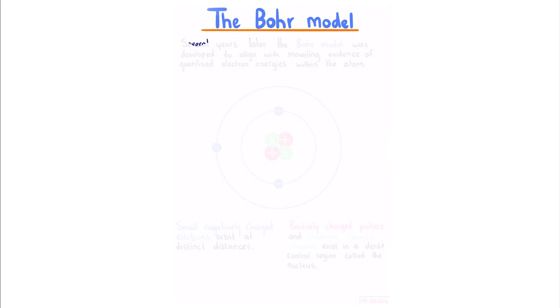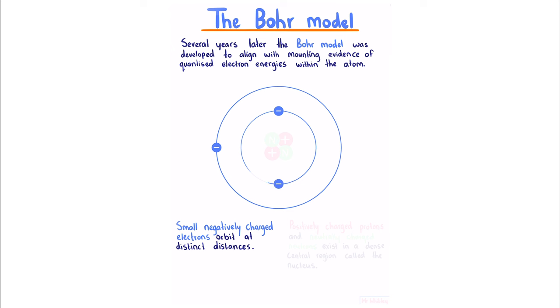The Bohr model. Several years later, the Bohr model was developed to align with mounting evidence of quantized electron energies within the atom. It consists of small, negatively charged electrons orbiting at distinct distances, and positively charged protons and neutrally charged neutrons existing in a dense central region called the nucleus.